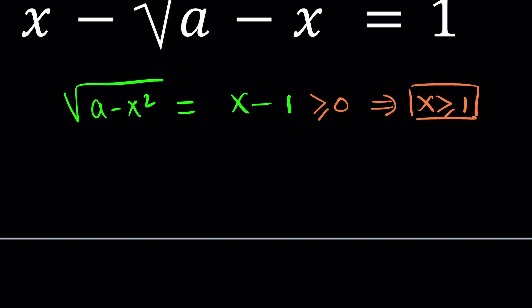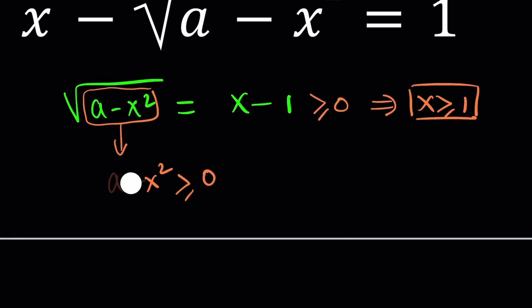The second thing we need to look at is the expression inside the radical. That also needs to be greater than or equal to 0, because otherwise the result is not going to be a real number. This is a little bit more complicated because it seems to involve two variables, but notice x is the variable and a is the parameter, or the given number. For example, if a is 5 you'll get one inequality, if a is 3 another — a family of inequalities, in other words.